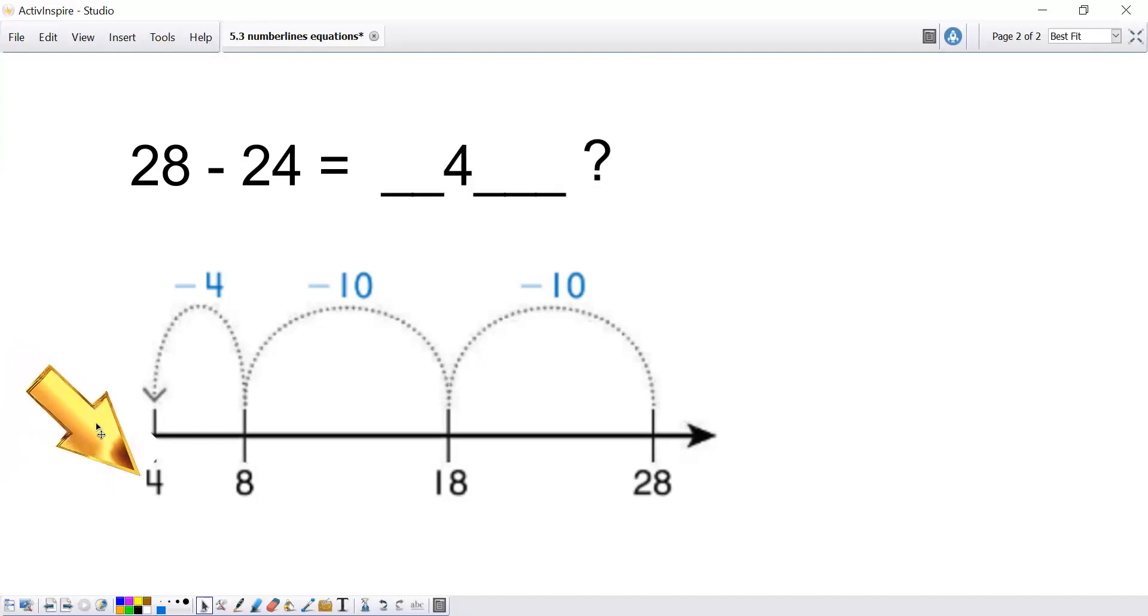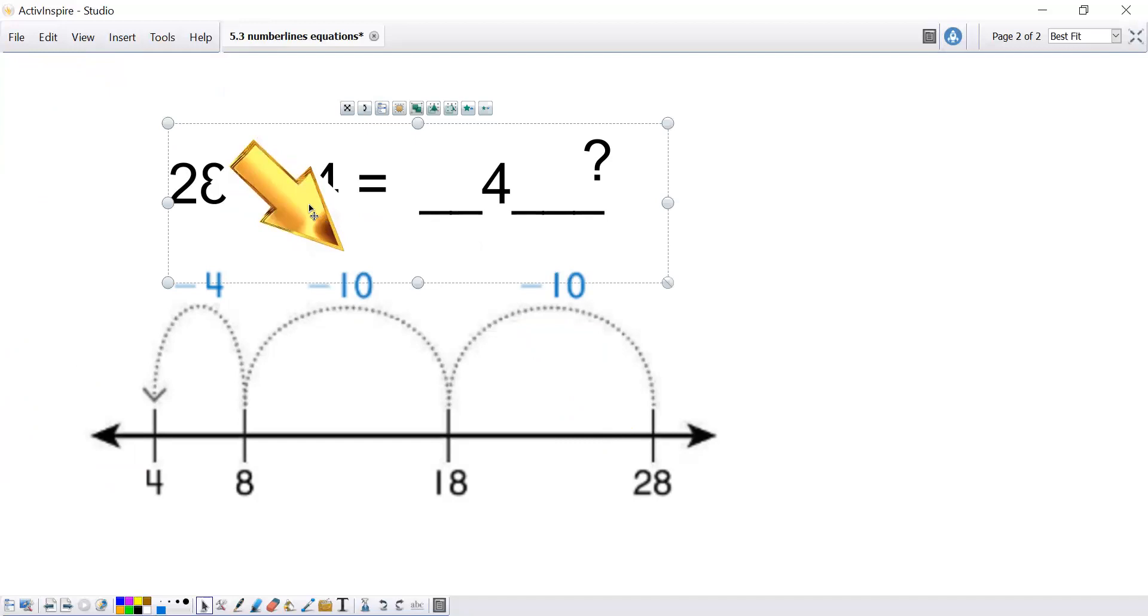Ta-da! 28 subtracting 24, 10, 20, and 4, equals 4. And that's how we do number line equations. Let's practice some more.